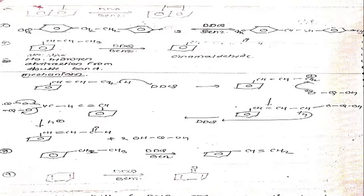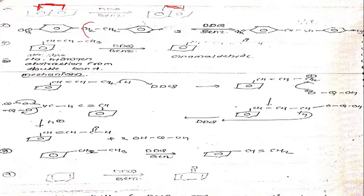Next example: this is a dibenzene compound attached to a CH2-CH2 group. This reacts with DDQ in presence of benzene. Here this single bond gets converted to a double bond. This CH2 compound reacts with DDQ and gets converted to CH=CH double bond.